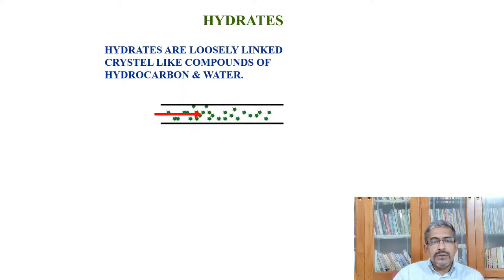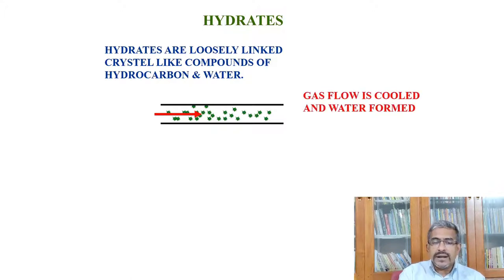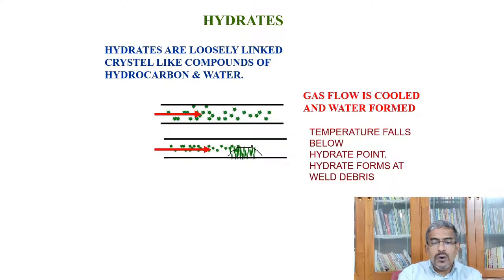Let us see first what are hydrates. Hydrates are loosely linked crystal-like compounds of hydrocarbon and water. Whenever water and hydrocarbon are passing from wellhead to surface or one location to another location, hydrates are loosely linked. Gas flow is cooled and water formation increases whenever the temperature comes down. More water comes out of the gas. When temperature falls below a particular point, that is called hydrate point, hydrates form at weld debris.